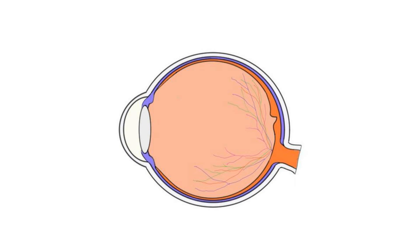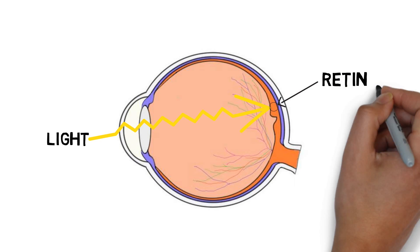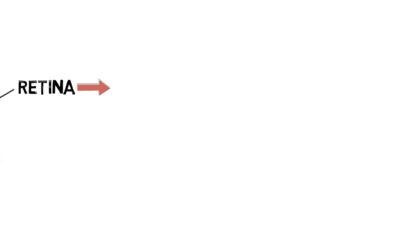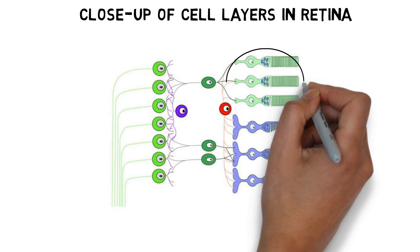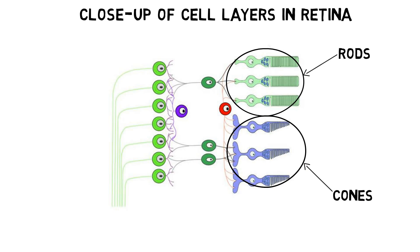Phototransduction is the process that occurs in the retina, where light is converted into electrical signals that can be understood by the nervous system. It primarily takes place in photoreceptor cells, of which there are two main types: rods and cones. I will discuss phototransduction in rods, although the process is similar in cones.